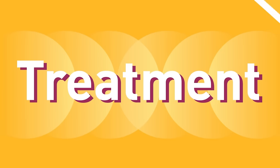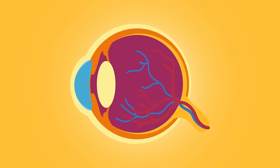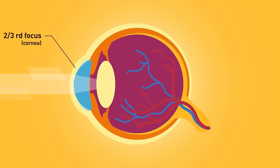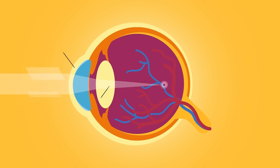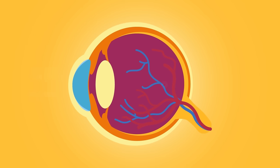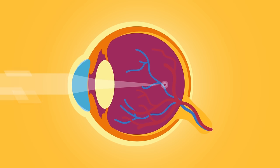Treatment. Unlike the camera, maximum two-thirds of focusing in the eye is done by the transparent front part — the cornea — while the remaining one-third is done by the lens. So while treating these patients, we have to decrease the focusing power of the eye so that the image is formed on the retina instead of in front of it.